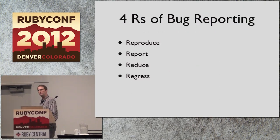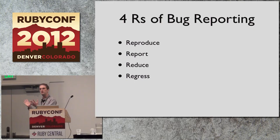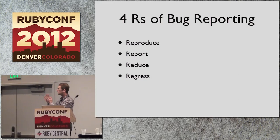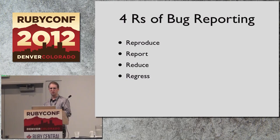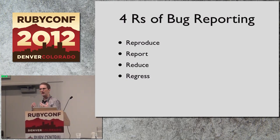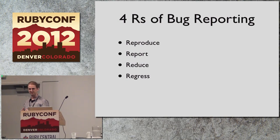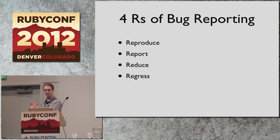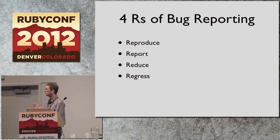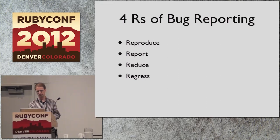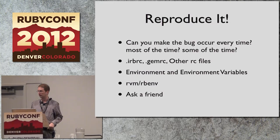Now, let's say you've been using Ruby and you happen to stumble across a bug. What next? I want to introduce you to the four R's of bug reporting. These are things that you should do if you want to be a good open source citizen. You want to reproduce, report, reduce, and regress. Let's look at those a little closer.